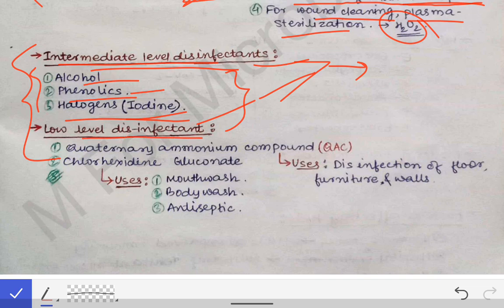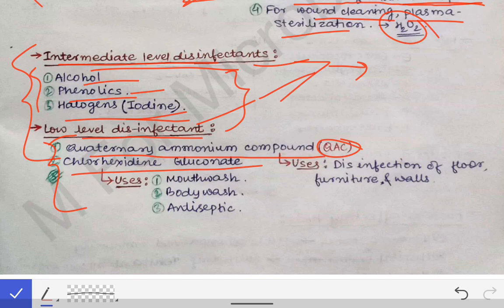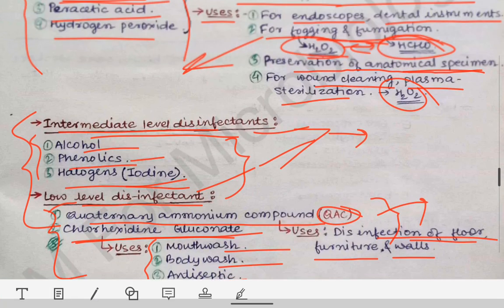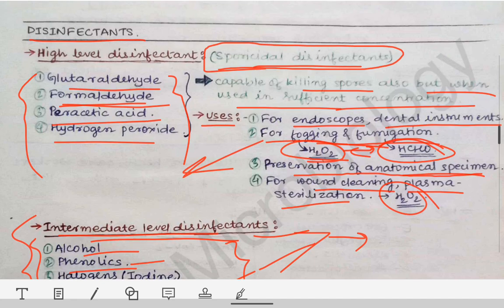For low-level disinfectants, we have quaternary ammonium compounds (QAC) and chlorhexidine gluconate. These are used for body washes — whatever Savlon or Dettol you use for body wash, they contain these components. They are used for mouthwash, body wash, and antiseptics. Quaternary ammonium compounds are used for disinfection of floors, furniture, and walls. Chlorhexidine gluconate is used for mouthwashes, body washes, and antiseptics. These are the disinfectants that students must remember.